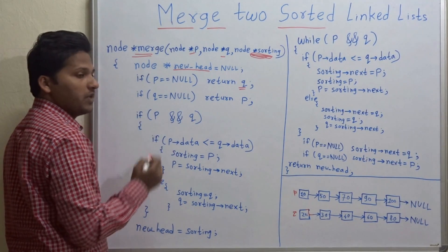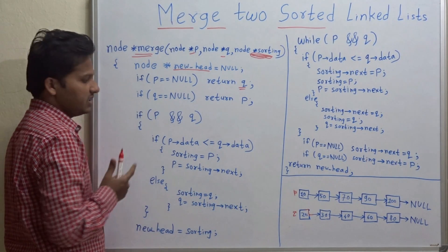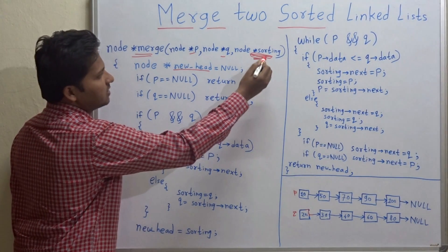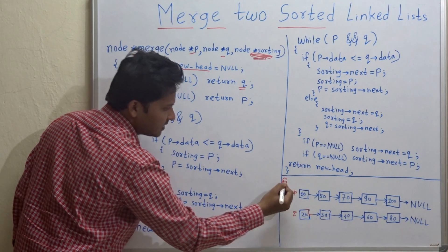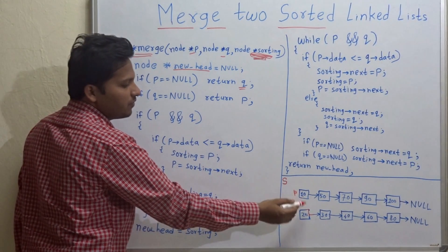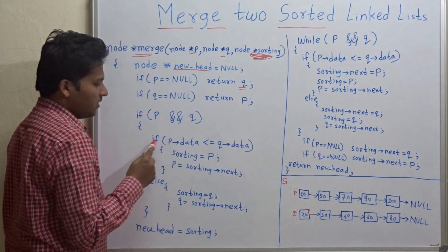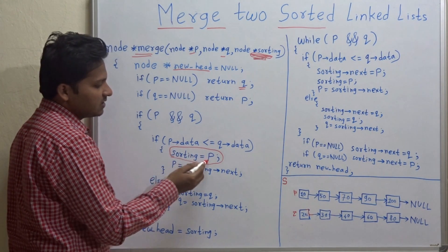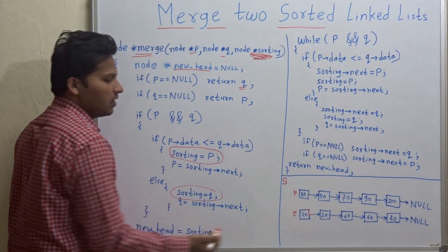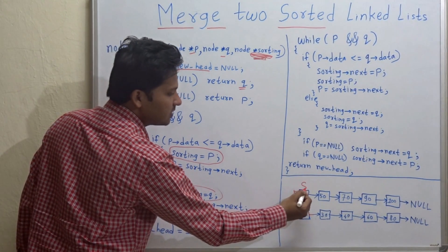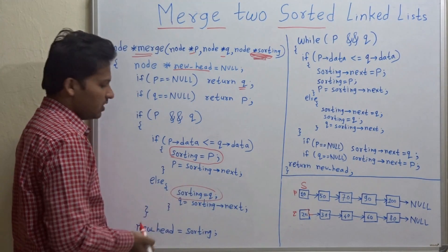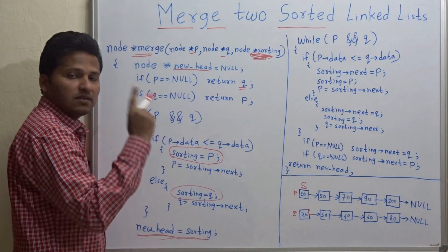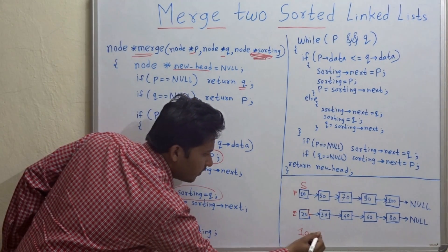If P and Q are both present, then what to do? As I have told you, initially the pointer sorting — which we called pointer S, the sorting pointer — will point to the node which has the lesser value. If P's data is less than or equal to Q's data, then sorting will point to that node; otherwise sorting will point to Q. In this case 10 is less than 20, so S will point to 10, the first node of the first linked list. And obviously that is our new head, so 10 is the head of the answer linked list.